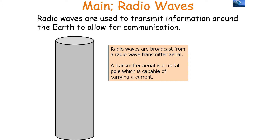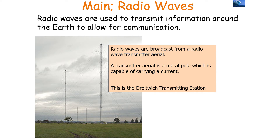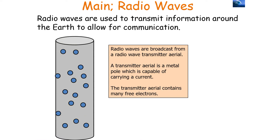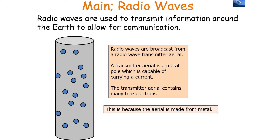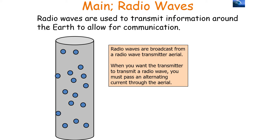Radio waves are broadcast from a radio wave transmitter aerial, which is a metal pole capable of carrying a current — such as the Droitwich transmission station. The transmitter aerial contains many free electrons because it is made from metal. When you want the transmitter to transmit a radio wave, you pass an alternating current through the aerial.